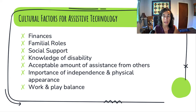Familial roles and who is around to help the child — especially with high-tech AT — can be an issue, as can social support and knowledge about disabilities and what's possible. Accepting the amount of assistance from others is also a factor: in a variety of different cultures, different levels of independence, interdependence, and dependence are acceptable and are the norm. There's also the importance of independence and physical appearance when using assistive technology.